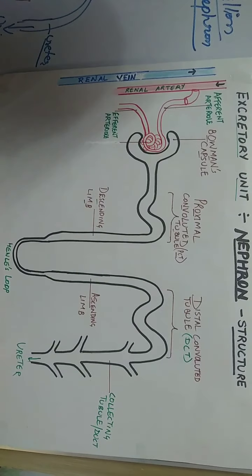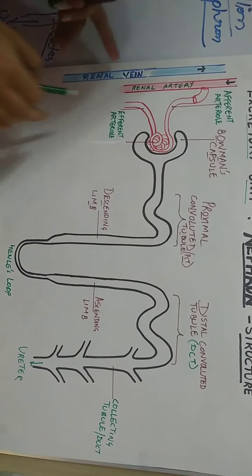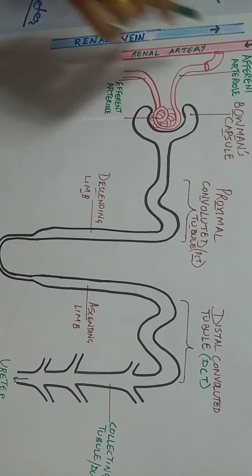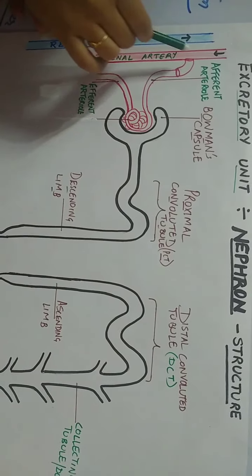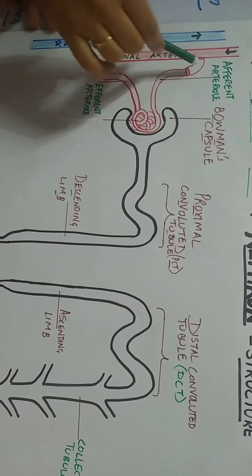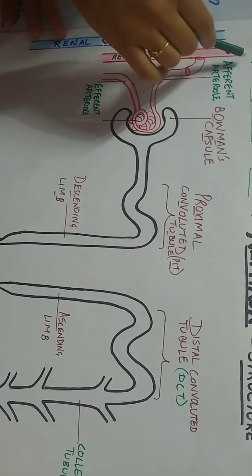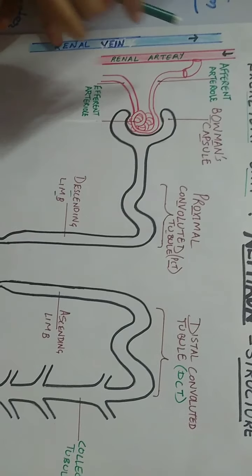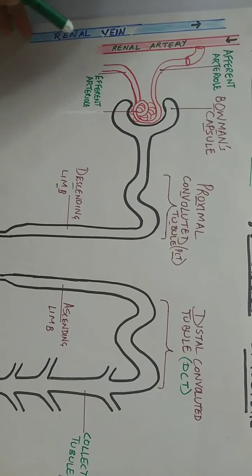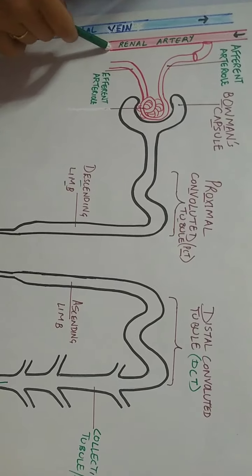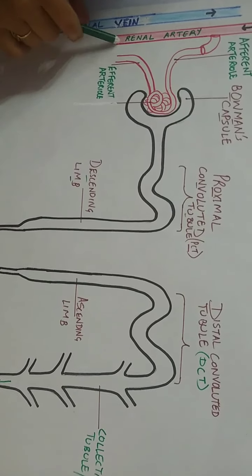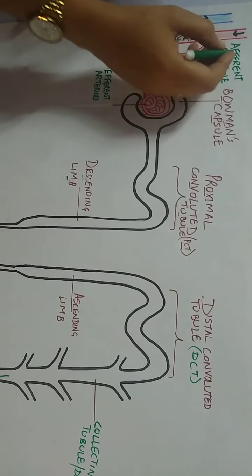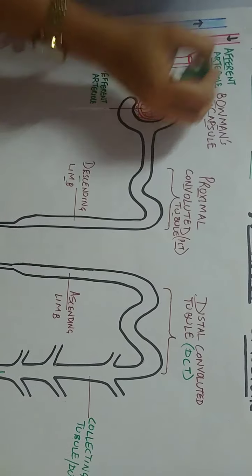From the aorta, oxygenated blood and impure blood containing toxic waste material enters each kidney through the renal arteries. The renal artery then divides into many small capillaries called afferent arterioles, which come to the junction of each and every nephron.